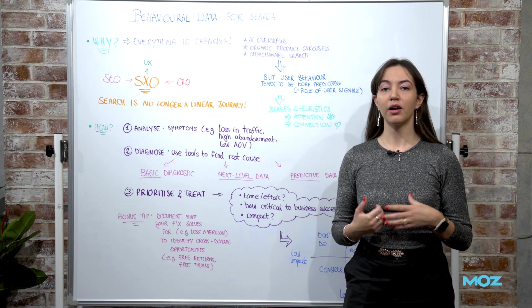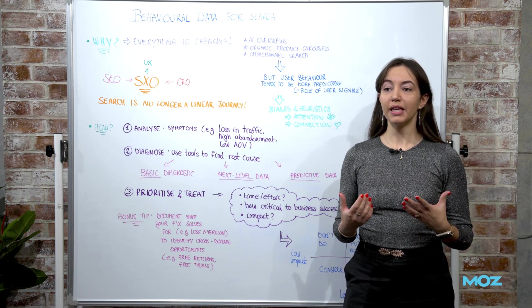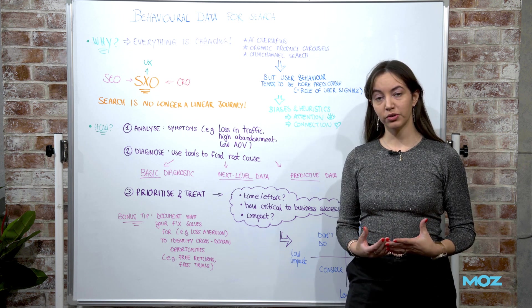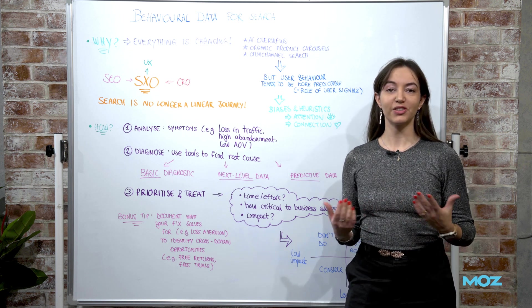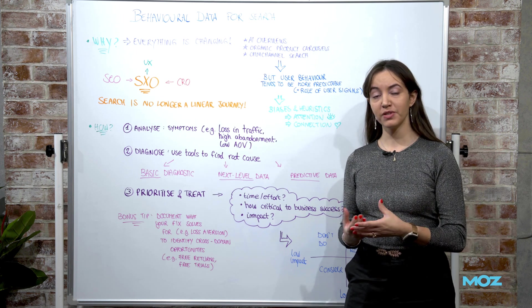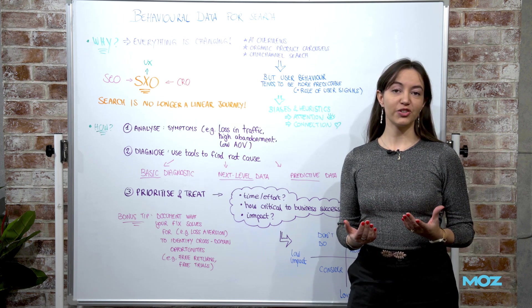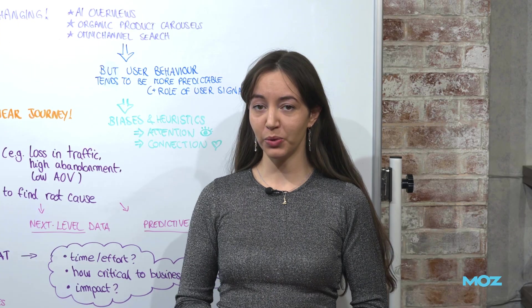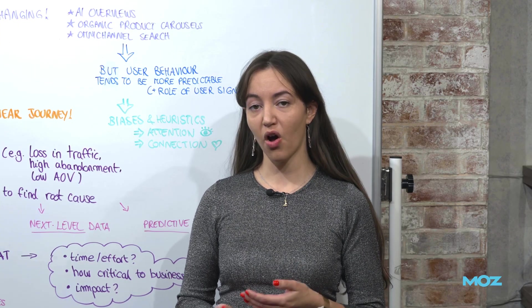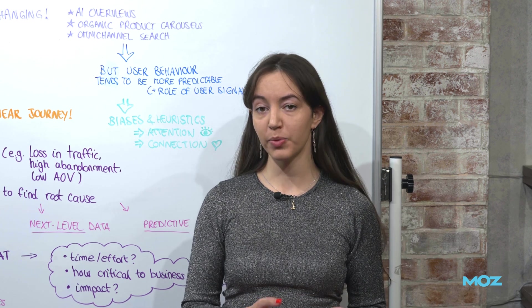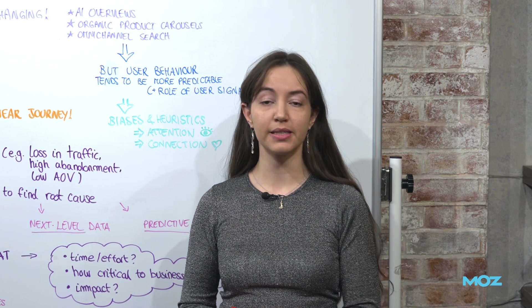Now users are more attuned to making queries that are more conversational. They're using several channels to do their searches so they're not only searching on Google, they're using LLMs, they're using socials, so their searches are omnichannel. And it is believed that by 2026, 25% of traditional search engine volume will drop in favor of AI chatbots and other virtual assistants according to research by Gartner.